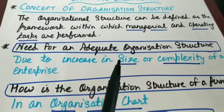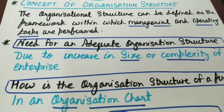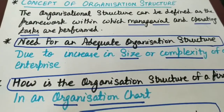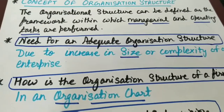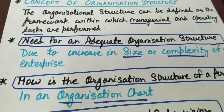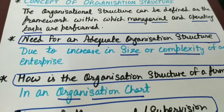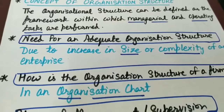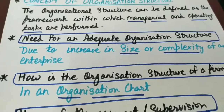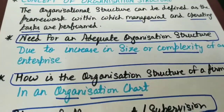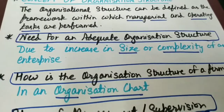Organization structure coordinates among human, physical and financial resources, and ye ek enterprise ko help kerta hai ki woh desired goals ko attain kar paye. Proper organization structure jo hai, woh zaroori hai ek enterprise mein, because it ensures ki organization mein smooth flow of communication is going on, better control is there over the operations of a business enterprise. Aur ye hume profitability of the enterprise ko bhi increase karne mein help kerta hai.